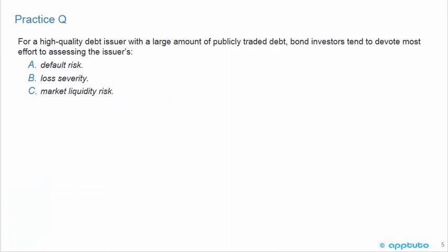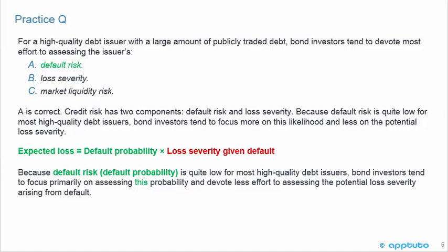For a high-quality debt issuer with a large amount of publicly traded debt, bond investors tend to devote most effort to assessing the issuer's: A. Default risk, B. Loss severity, or C. Market liquidity risk. The correct answer is A. For a high-quality debt issuer with a large amount of publicly traded debt, bond investors tend to devote most effort to assessing the issuer's default risk. So credit risk has two components: default risk and loss severity.